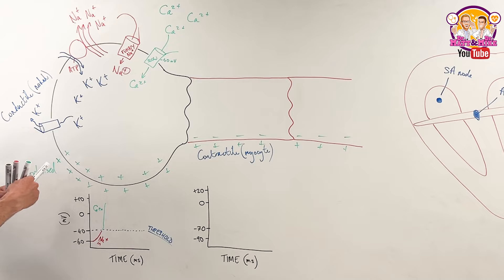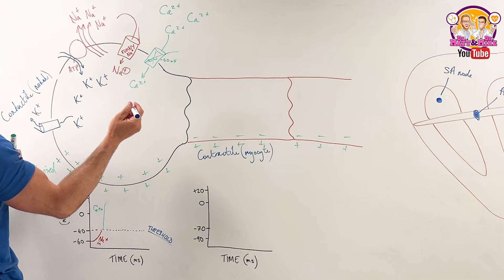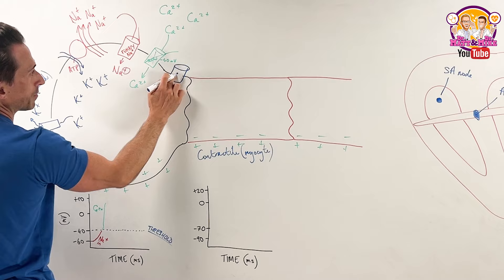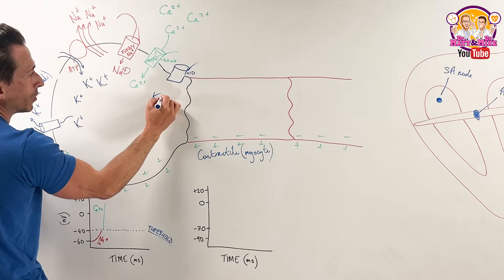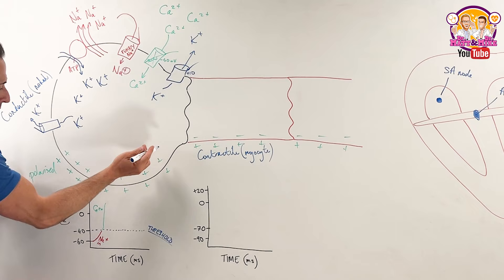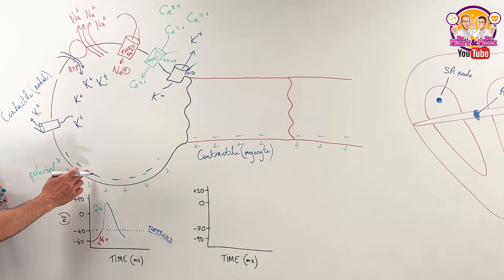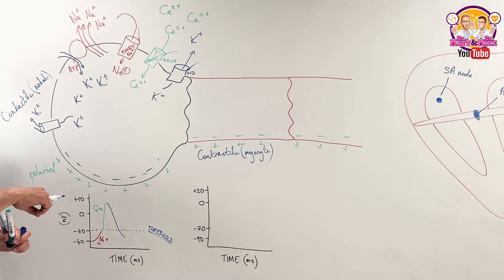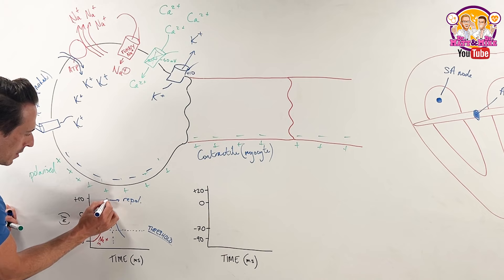Once we hit around about positive 10, the calcium channels close. Positive 10 is another key to open potassium channels. Where's most of the potassium? Inside. So the potassium will leak outside, carrying that positive charge with it, which means it makes it negative inside again - it drops back down to being negative inside and positive outside. So we go from being depolarized to repolarized. This side is repolarization and this side is depolarization.